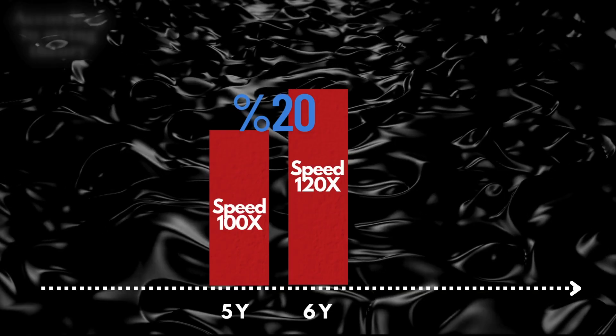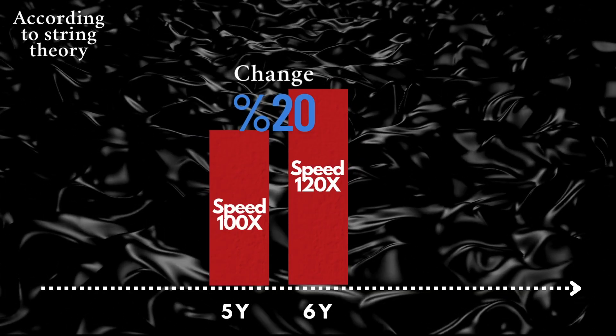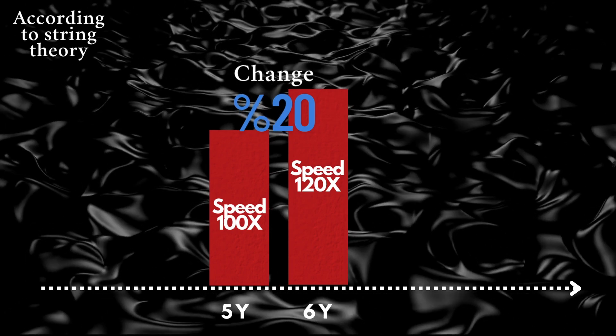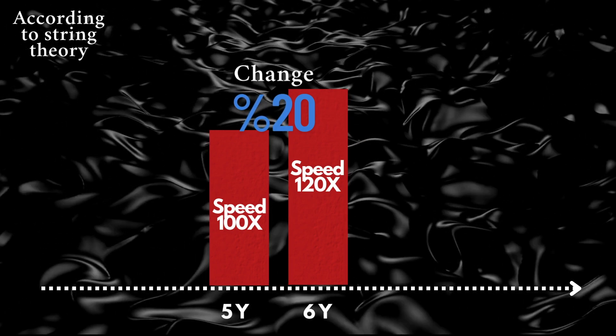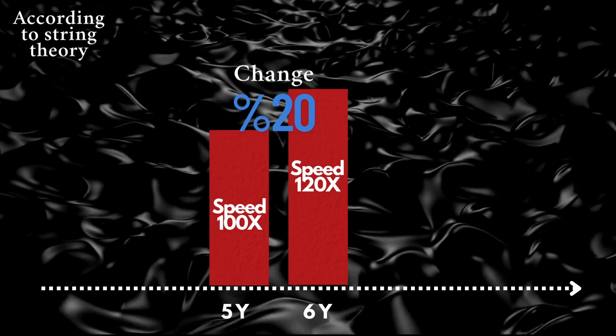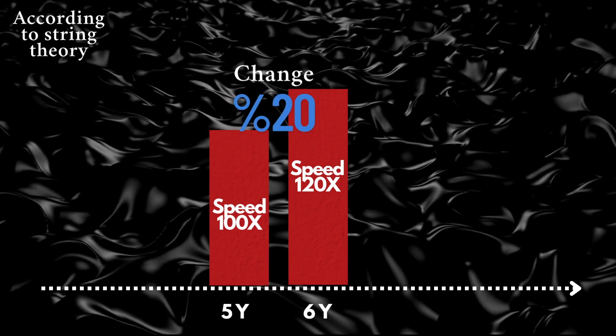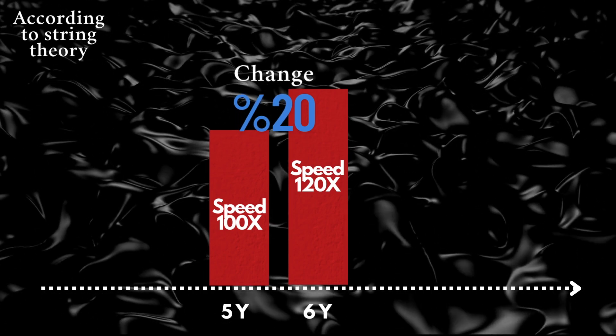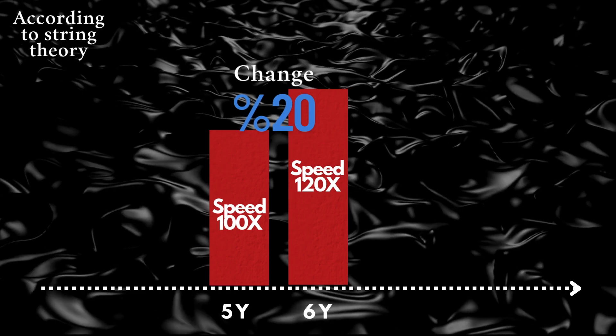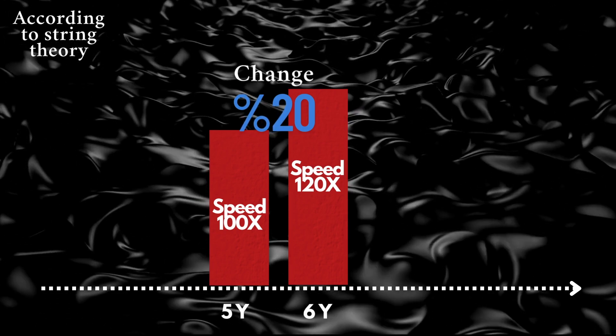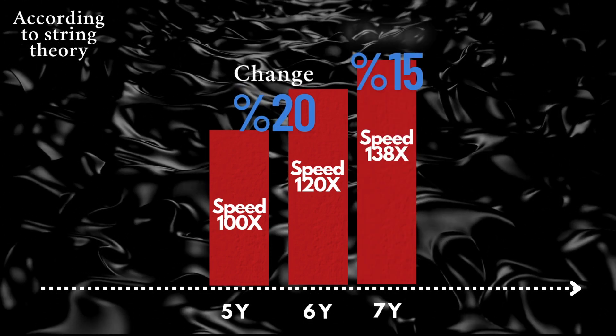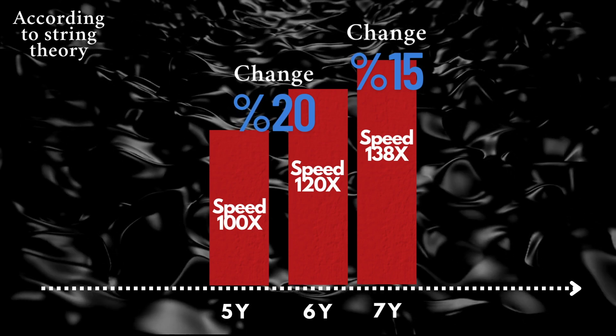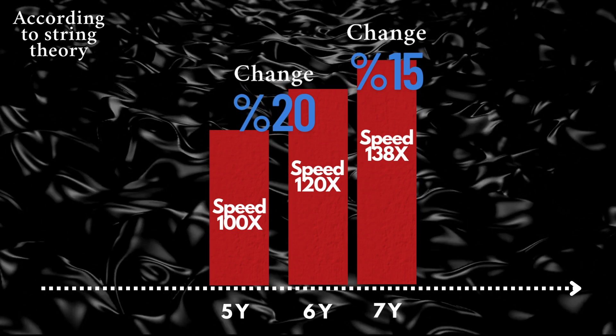Let's go back to our earlier example. If the expansion rate increased from 100x to 120x, a 20% rise, then under a constant dark energy model, the next step would be another 20% increase, reaching 144x. But according to string theory, that wouldn't happen. Instead, the next increase might only be 15%, bringing the rate to around 138x, a smaller acceleration.